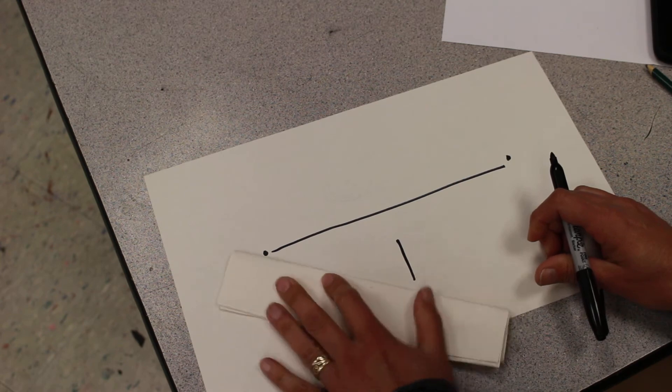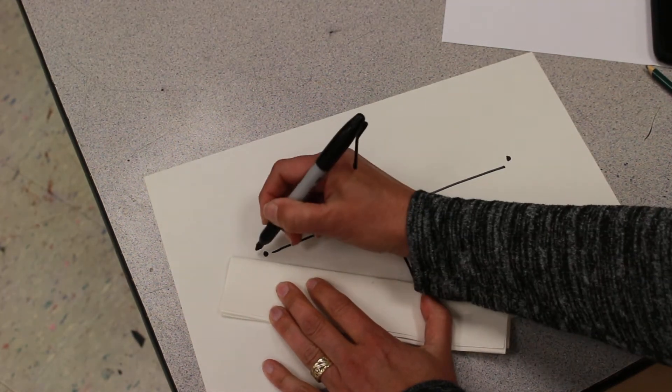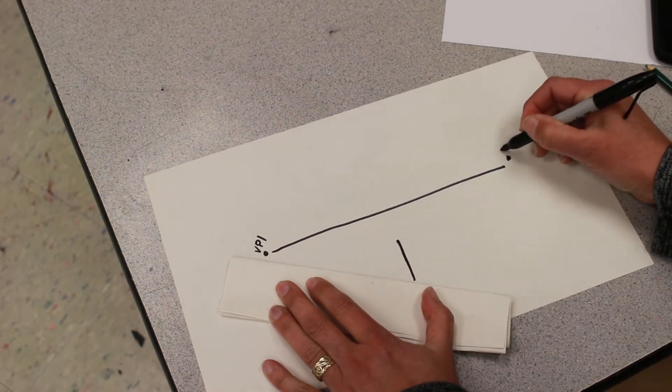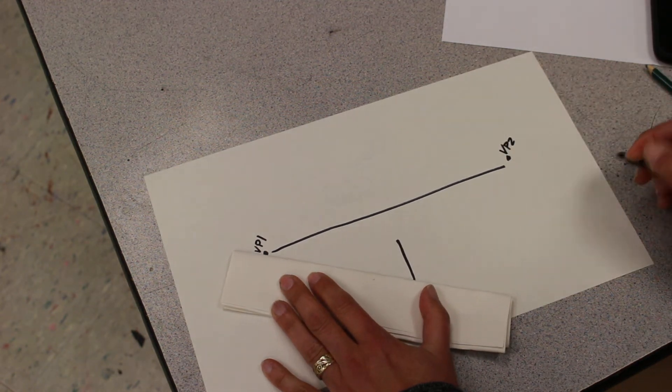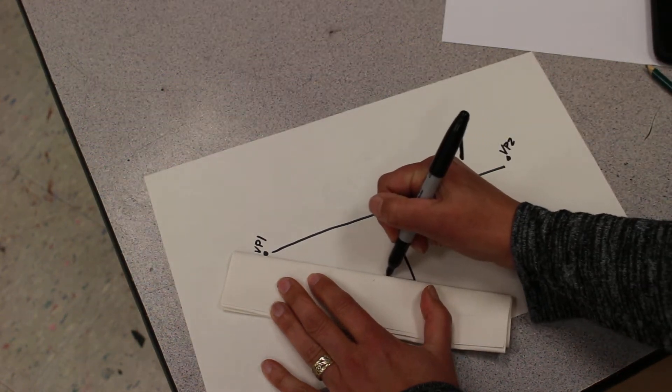And you're going to line up the bottom of the box with the vanishing point. I'll label this one vanishing point one and this one vanishing point two. And you draw an orthogonal line.